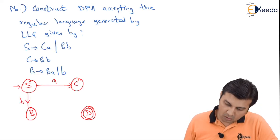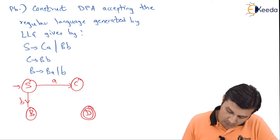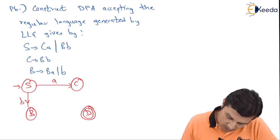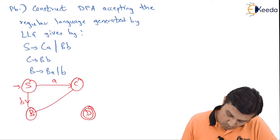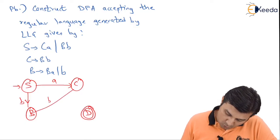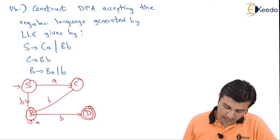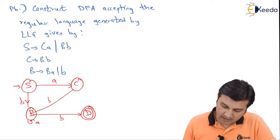Then further C on A goes to B, so that is a cyclic transition and B on A also, B on B also goes to D, so that completes my transition diagram.